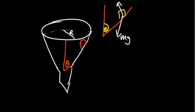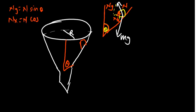Since the normal force is not in a straight line, it has an x-component and a y-component. The angle formed at that point is the same as the angle of the funnel wall. So Ny equals N sin theta, and Nx equals N cos theta.